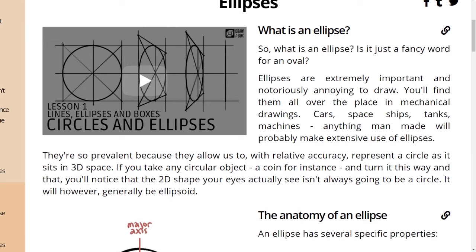What is an ellipse? So what is an ellipse? Is it just a fancy word for an oval? Ellipses are extremely important and notoriously annoying to draw. You'll find them all over the place in mechanical drawings. Cars, spaceships, tanks, machines, trains. Anything man-made will probably make extensive use of ellipses.